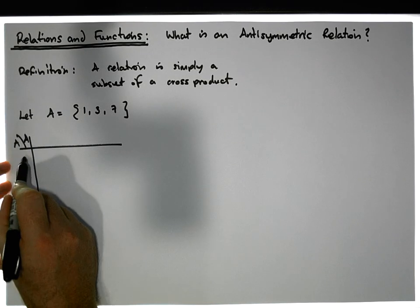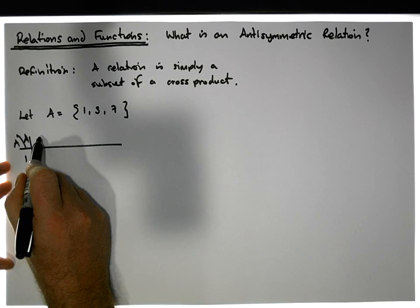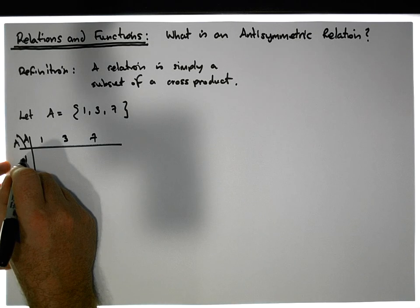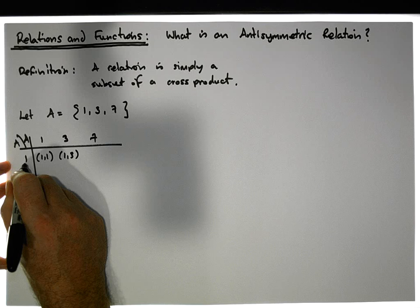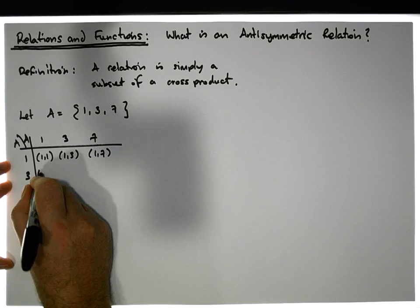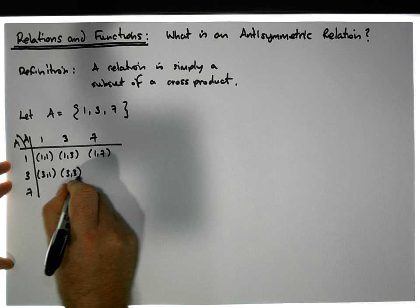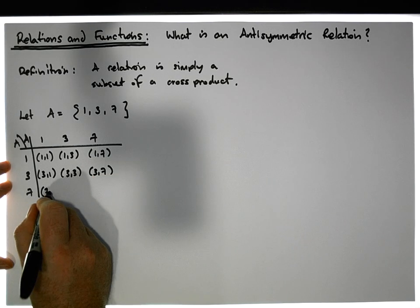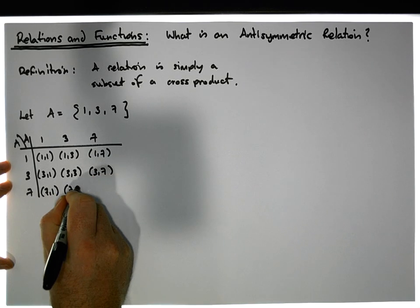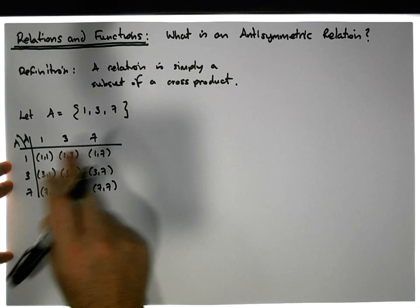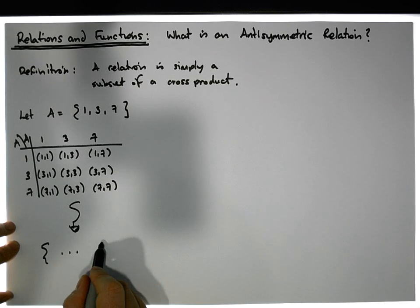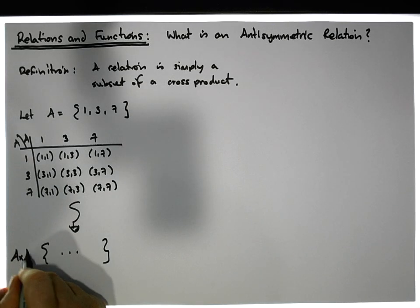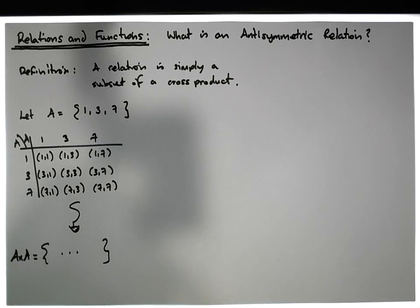We can construct a cross product table — A with A — listing 1, 3, 7 against 1, 3, 7 — and build the ordered pairs: (1,1), (1,3), (1,7), (3,1), (3,3), (3,7), (7,1), (7,3), (7,7). If we collect all of those into a set, we get A cross A, which in this case is a set with nine ordered pairs.